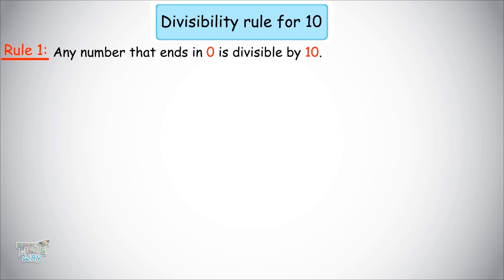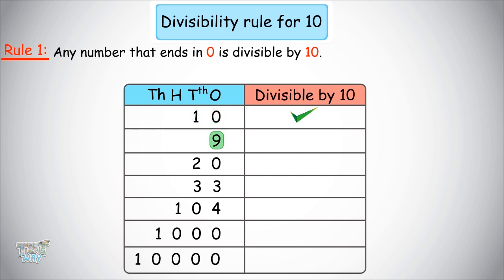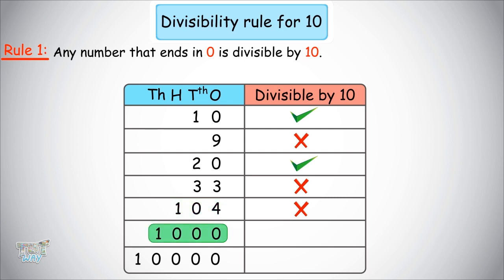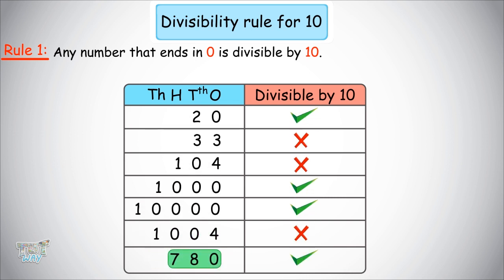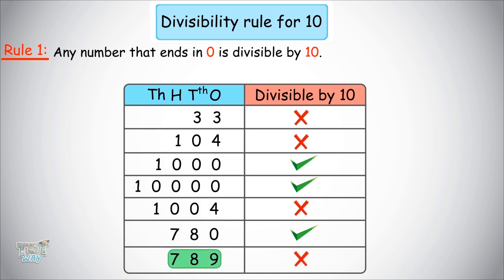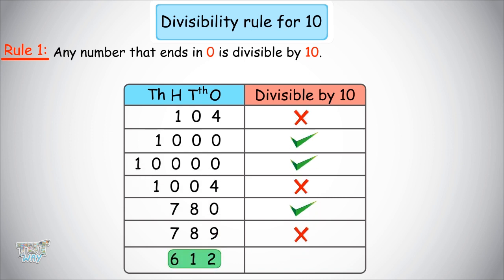Here we have some numbers. 10 — divisible by 10? Yes. 9 — no. 20 — yes, it ends with 0. 33 — no, because the ones-place digit is 3. 104 — no, because the ones-place digit is 4. 1,000 — yes, it is divisible by 10. 10,000 — yes, it is divisible by 10; the ones-place digit is 0. 1,004 — no, it is not divisible by 10. 780 — yes, it is divisible by 10; the ones-place digit is 0. 789 — no. 612 — no, it is not divisible by 10; the ones-place digit is 2. Therefore, it is fairly easy to check whether or not a number is divisible by 10.